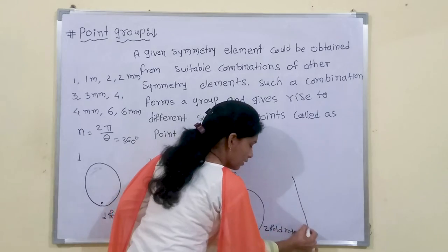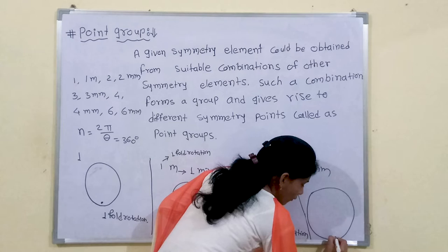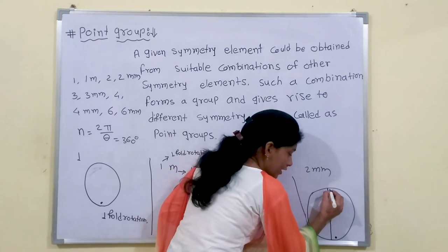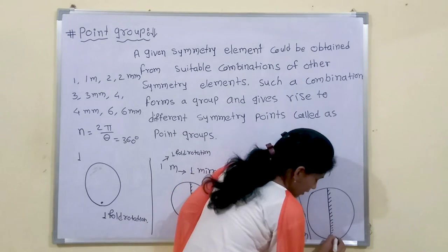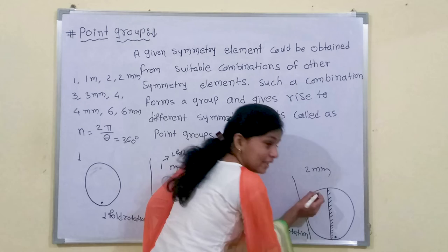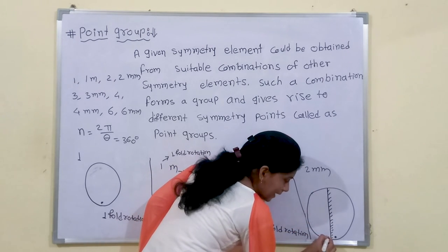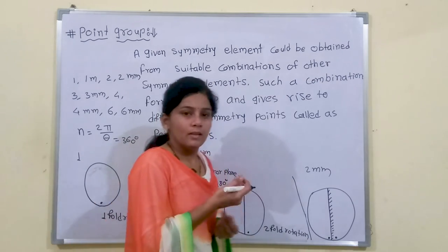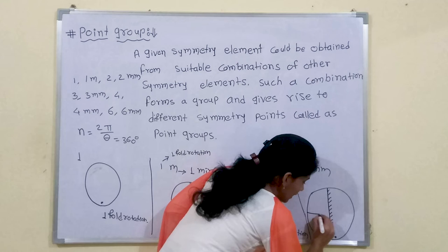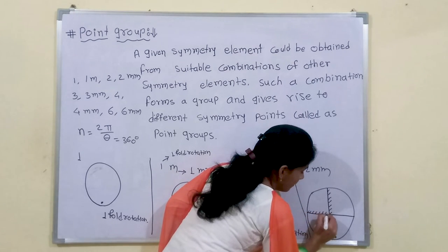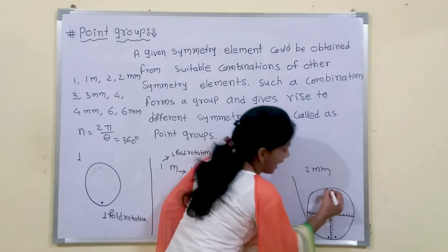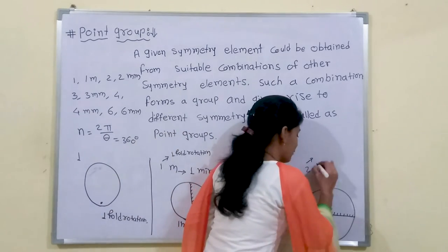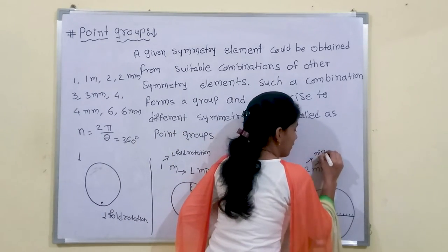For '2mm', if we have 1 lattice point and draw 1 mirror plane parallel to the rotation axis, we get the same lattice point reflected. If we also have a mirror plane perpendicular to the rotation axis, we get another similar lattice point. The '2' represents a 2-fold rotation axis, and the two 'm's represent two mirror planes — the first parallel to the rotation axis and the second perpendicular to the rotation axis.